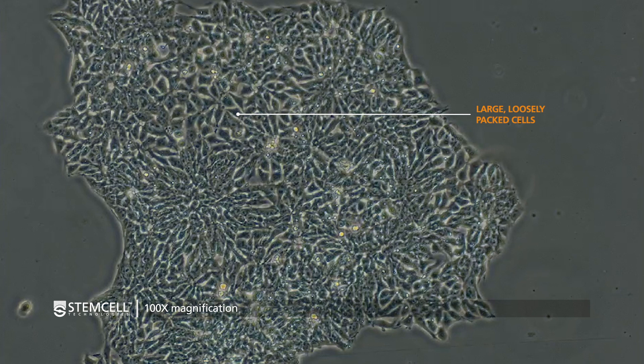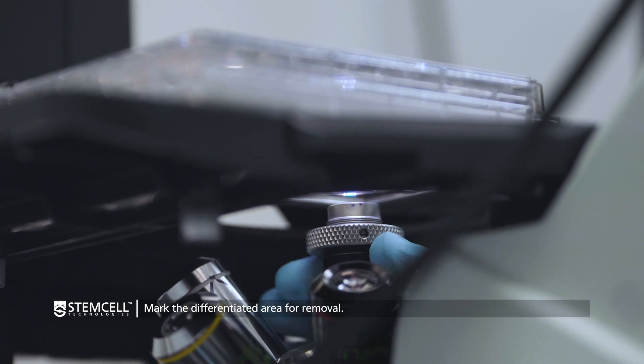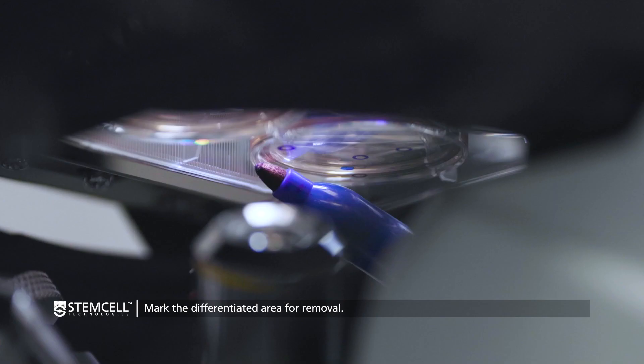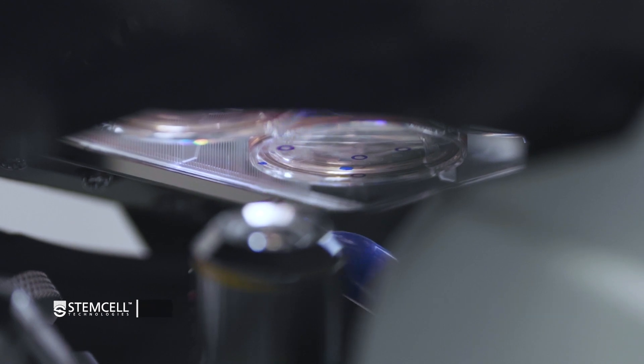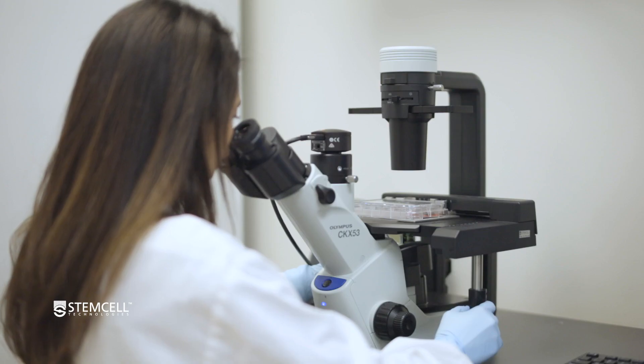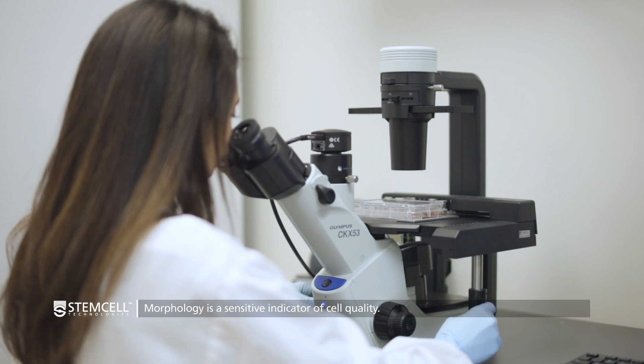Once you have identified an area of differentiation, using a microscope object marker or a permanent marker, mark the area on the underside of the plate and monitor this until the time of passage. HPSC morphology is a sensitive indicator of cell quality.